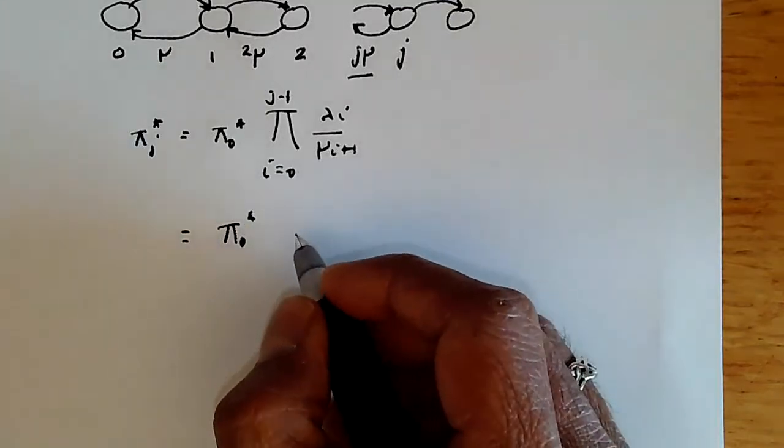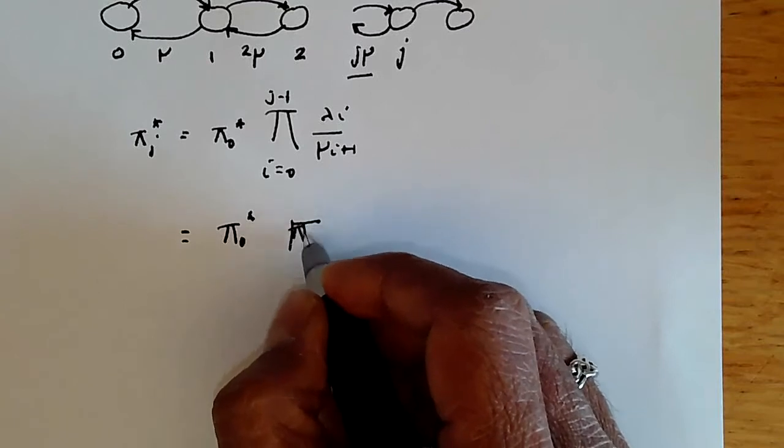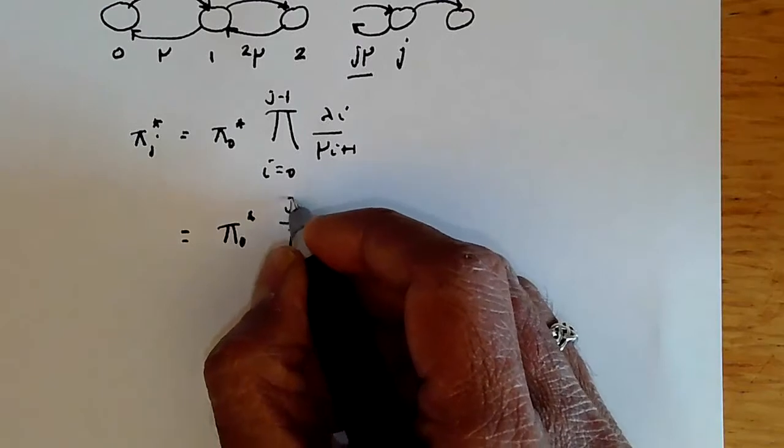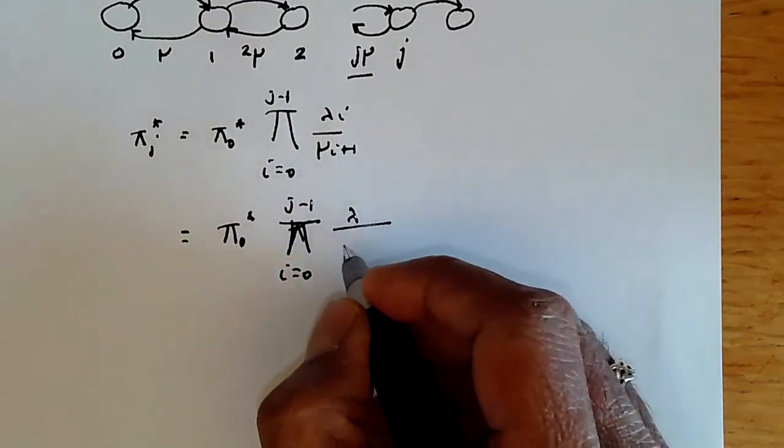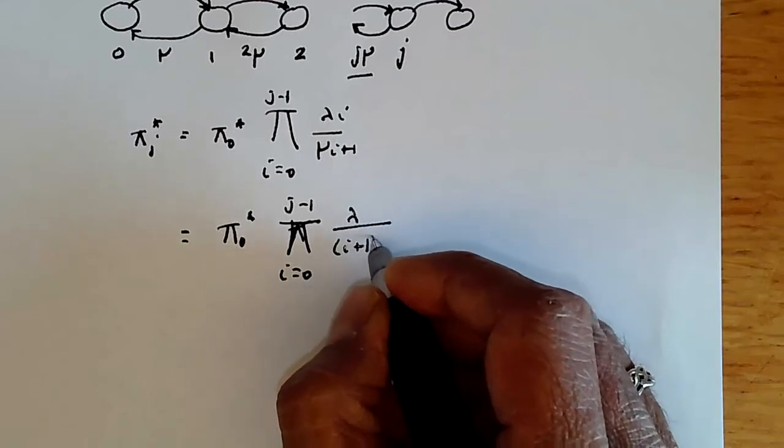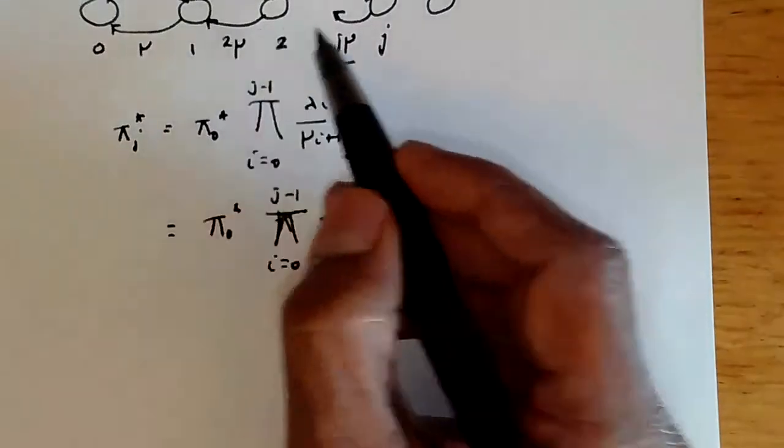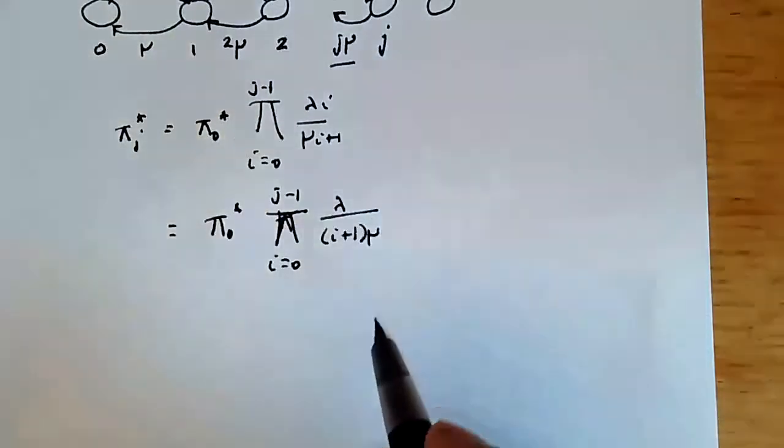And it will be pi, the product, the big pi, i equals 0 to j minus 1, lambda, because that's the arrival rate, over i plus 1 mu, because that's the service rate. So it's state j, it's j plus 1, so it's j plus 1 mu coming into the state.